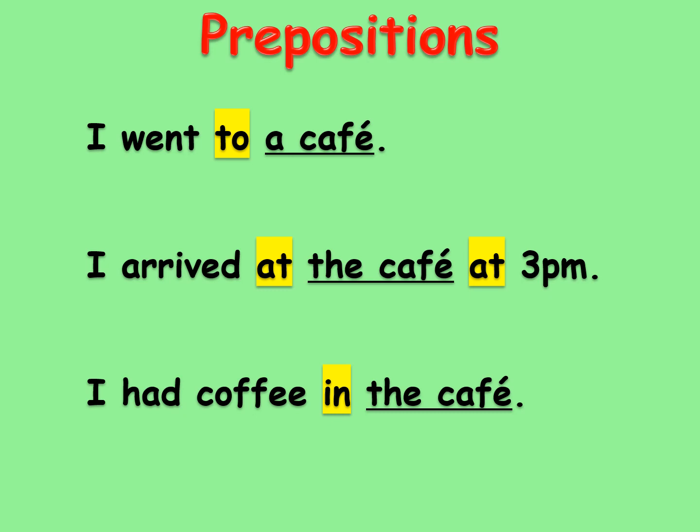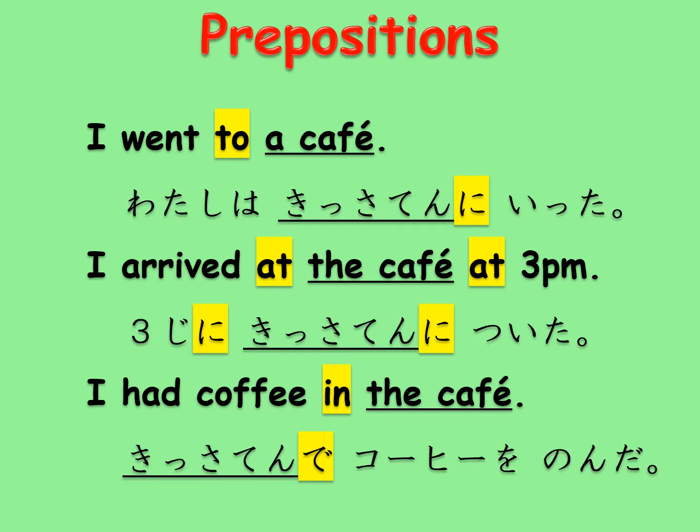The middle sentence has 'at' twice — one is for the cafe location and the other for 3 p.m., which is a time phrase. So prepositions are decided by the noun they are relating to and their relationship to the rest of the sentence. Japanese particles are used after the word we want to connect to the sentence, but the rest is almost the same as English prepositions. Which one to use is decided by the word we are connecting and how it relates to the rest of the sentence.